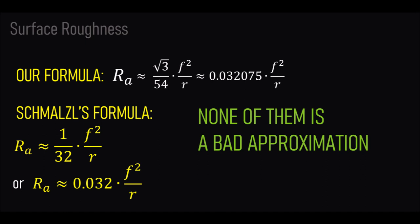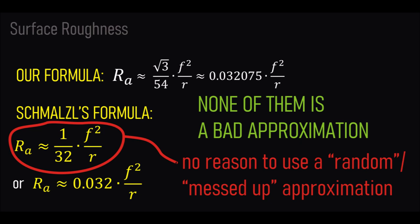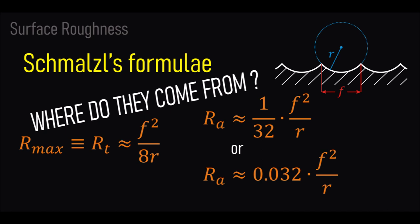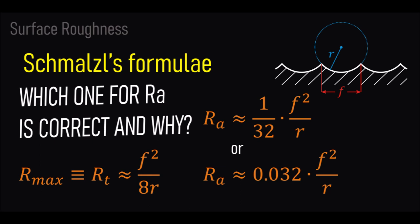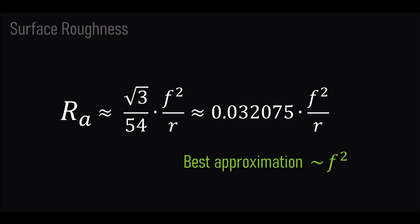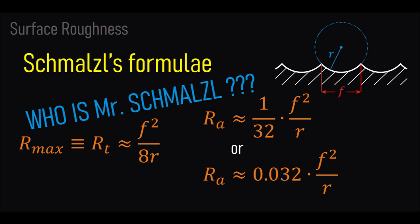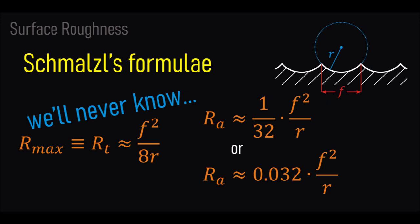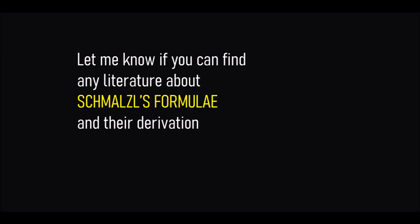We can conclude that none of these three formulae is a bad approximation. However, it makes no sense to use the messed-up version of the Schmalz formula with 1/32. We're at the end of the video. Our aim was to answer our initial questions: where do the Schmalz formulae come from? Now we know which formula for the average roughness is correct and why. We also found the real exact formula and the real exact coefficient for the best approximation: √3 over 54. As for who Mr. Schmalz is — I don't know who he is and how he originally came up with those formulae. I guess they're just some numerical approximation, or maybe obtained with a simpler, smarter process. Let me know if you can find any source material explaining the Schmalz formulae and their original derivation. I came up with this video to give myself a proof for those formulae. I hope you appreciated the effort and enjoyed the video. Thanks for watching.